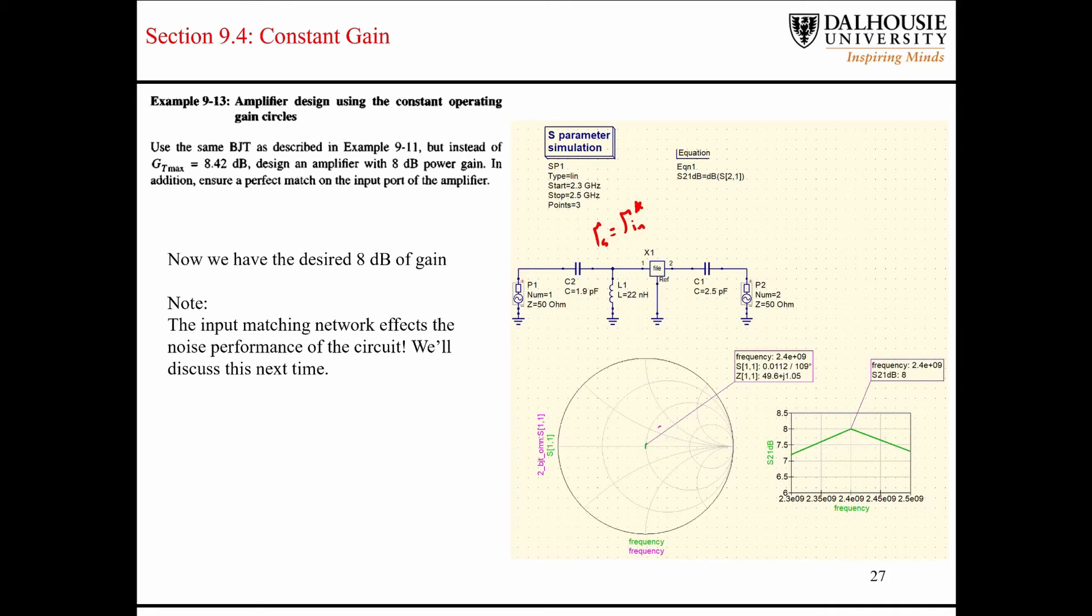As our, I guess I'll call this gamma naught. The reflection coefficient seen looking into the entire circuit will end up right smack dab in the center of the Smith chart here, indicating a perfect match on the input side here, which is what was asked for. So, after we accomplish this, once we match the source impedance with the complex conjugate of the input impedance to the transistor, then you can see over here that we achieve our gain of 8 dB.